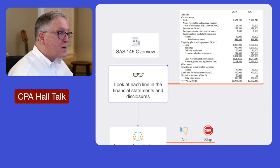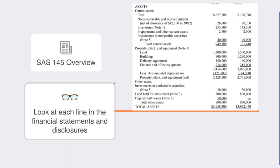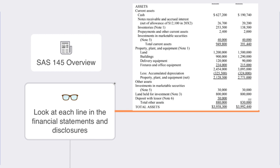Let's pretend for a moment that materiality is $100,000. If it is, the numbers that are material this year would be cash, inventories, PP&E, and land held for investment. You would want to continue looking at the rest of the balance sheet and income statement — I'm just showing you this as an example.